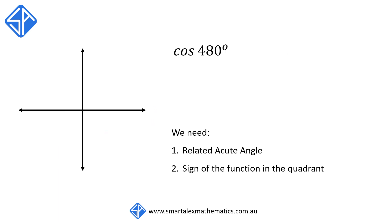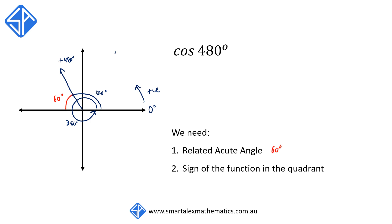Our last example is cos 480 degrees. Now, this is greater than 360 degrees, but the same idea applies. Starting off at zero degrees and rotating anticlockwise in the positive direction, we first rotate 360 degrees, and to get to 480 degrees, we rotate a further 120 degrees. This ray corresponds to the angle positive 480 degrees. The related acute angle is the angle between the ray and the x-axis, which equals 60 degrees. Using "all stations to central", cos is negative in the second quadrant, and therefore cos 480 degrees can be expressed as negative cos 60 degrees.